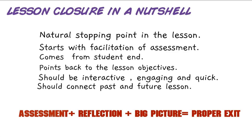So what does a proper exit or lesson closure take away with your students? There are three different things: first is assessment, second is reflection, and third is big picture. Assessment means we assess whether objectives have been met. Reflection means we reflect back on the objectives — what we wanted to learn and what we actually learned. Big picture means we connect with past and future lessons. If we do these three things during closure, our closure and our exit will be proper.